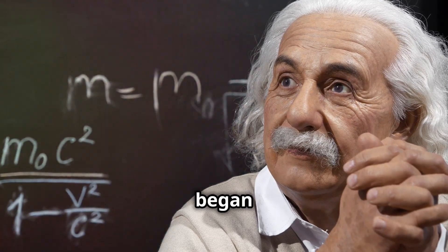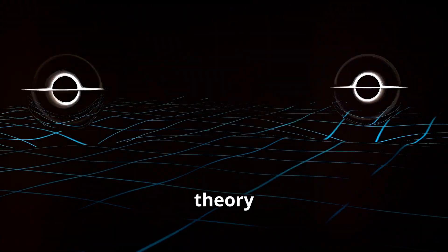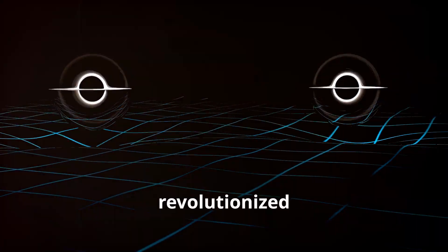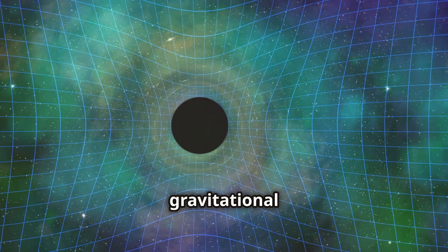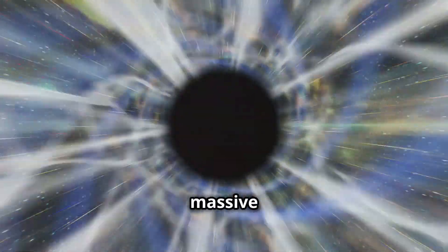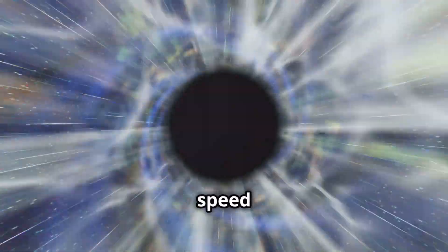The story of gravitational waves began over a century ago with Albert Einstein. In 1915, Einstein published his theory of general relativity, which revolutionized our understanding of gravity. Einstein's theory predicted the existence of gravitational waves. He showed that massive objects accelerating in space-time would create ripples that propagate at the speed of light.